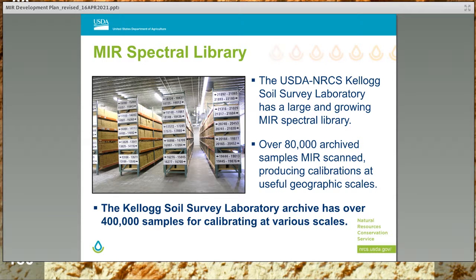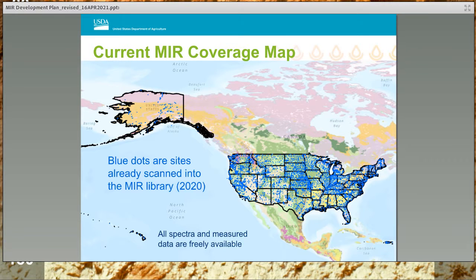Building a national spectral library is feasible using the National Soil Archives at the Kellogg Soil Survey Laboratory. The archive represents decades of natural resource inventory. These archive samples were already analyzed by conventional methods for key soil properties such as carbon, clay, and cation exchange capacity. Scanning those same samples for their MIR spectra allows building calibrations at local or regional scale. This map illustrates the current coverage represented by the KSSL MIR spectral library in the United States. As the MIR library expands to underrepresented areas, more soil sample variability can be captured in the calibration, making MIR more broadly applicable with increased accuracy.